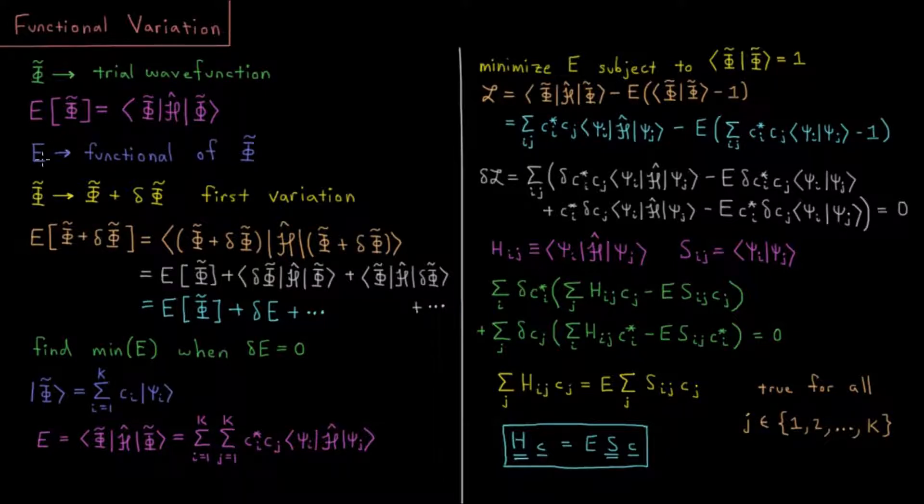E is a functional of our trial wave function, depending on what the value of that wave function is at all 3n or 4n coordinates, the spatial and spin parts of every electron.